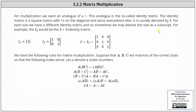For matrix multiplication, we want something similar to a one in real numbers — an analog of a one. This analog is the so-called identity matrix. The identity matrix is a square matrix with ones on the diagonal or main diagonal and zeros everywhere else. It is usually denoted with a capital I. For each size we have a different identity matrix, so sometimes we include the size as a subscript. For example, I sub three would be the three by three identity matrix. I've also included the one by one identity matrix as well as a two by two identity matrix.